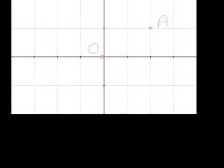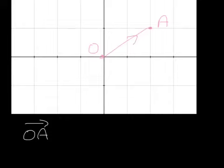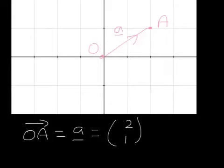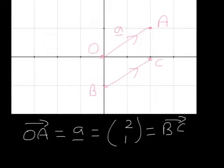Sometimes, instead of writing OA for the vector from O to A, a lowercase letter underlined can be used. So they mean the same thing — in both cases it's (2, 1). It's worth noting that the vector BC is also equal to (2, 1). So vectors OA and BC are equal: they've got the same magnitude and they're in the same direction. They're parallel and in different positions, but they have the same magnitude and direction, so they're equal.